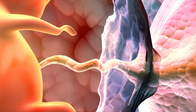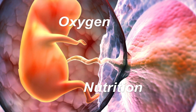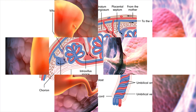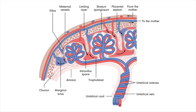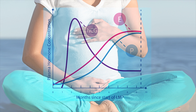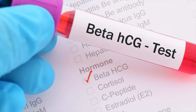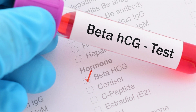This attachment to the uterine lining allows the embryo to receive oxygen and nutrients from the mother and continue to grow into a fetus. As soon as implantation is complete, the embryo begins to produce the hormone HCG — the hormone that turns a pregnancy test positive.